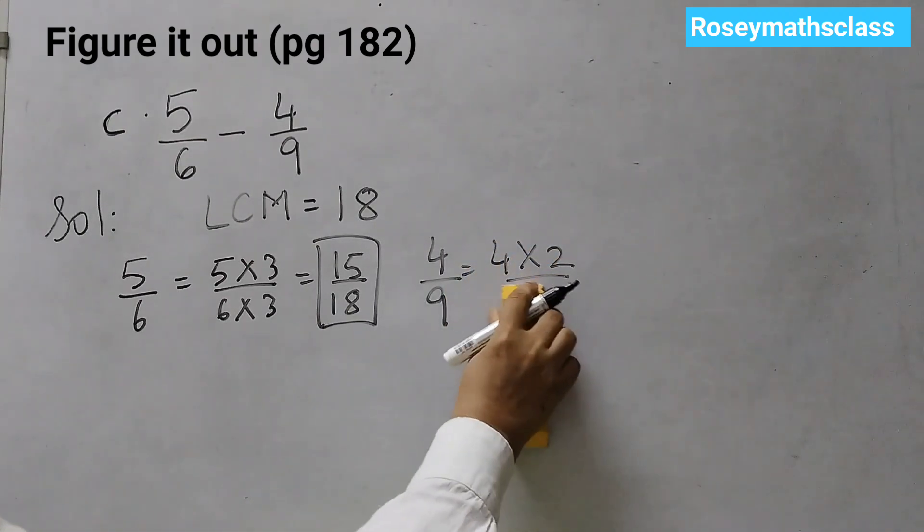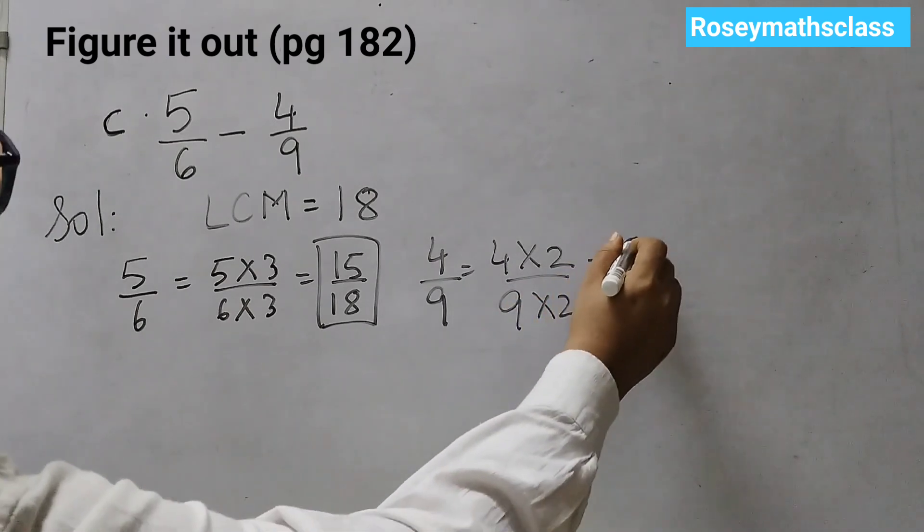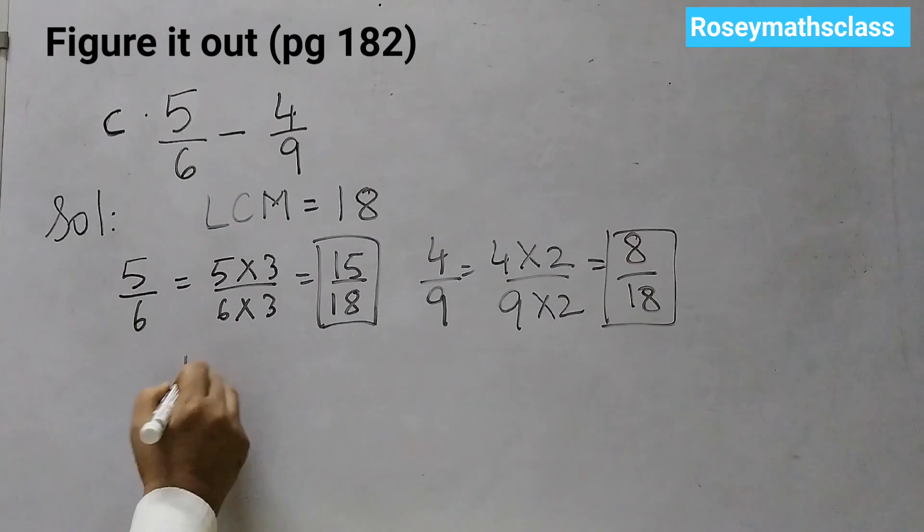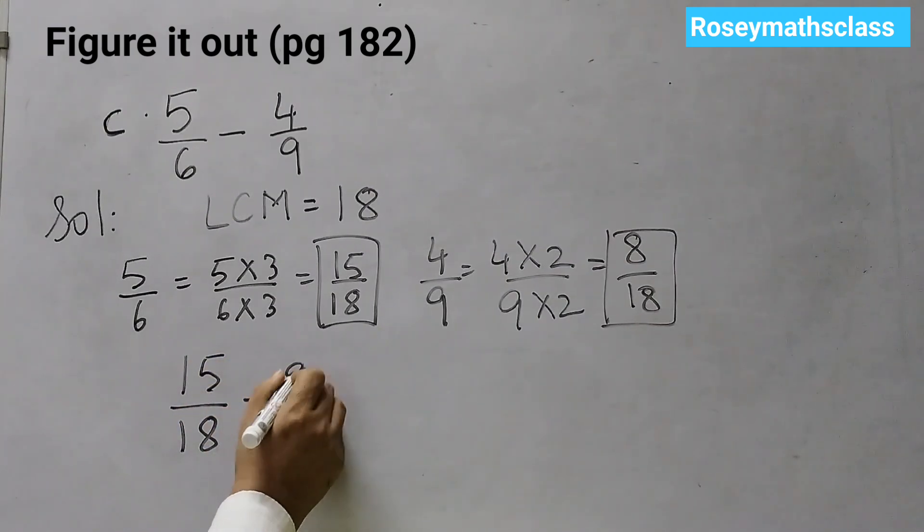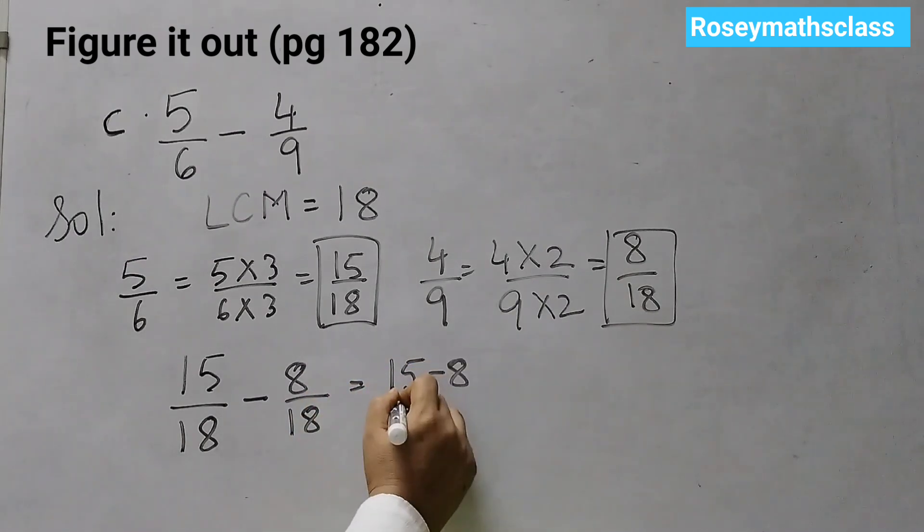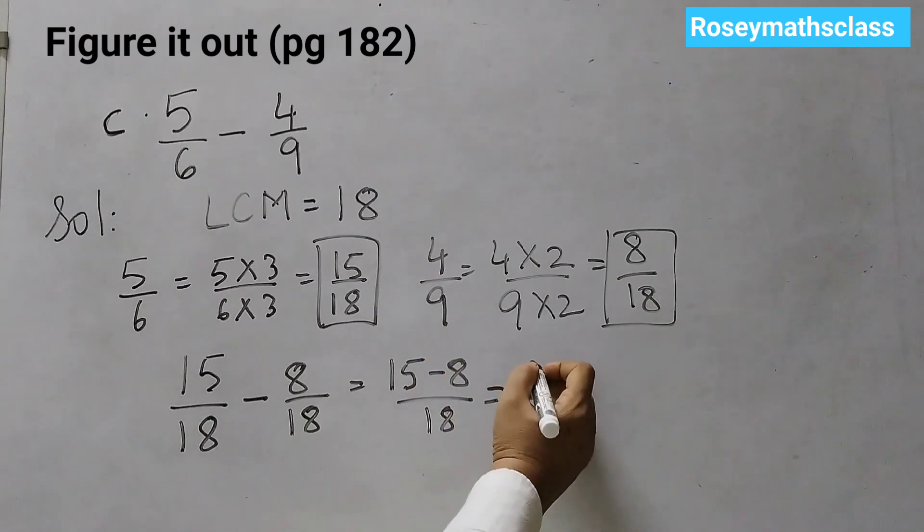Sorry, here it's 9. 8 upon 18. So 15 over 18 minus 8 over 18. 15 minus 8 upon 18 and that equals to 7 upon 18. And that's the answer for the third one.